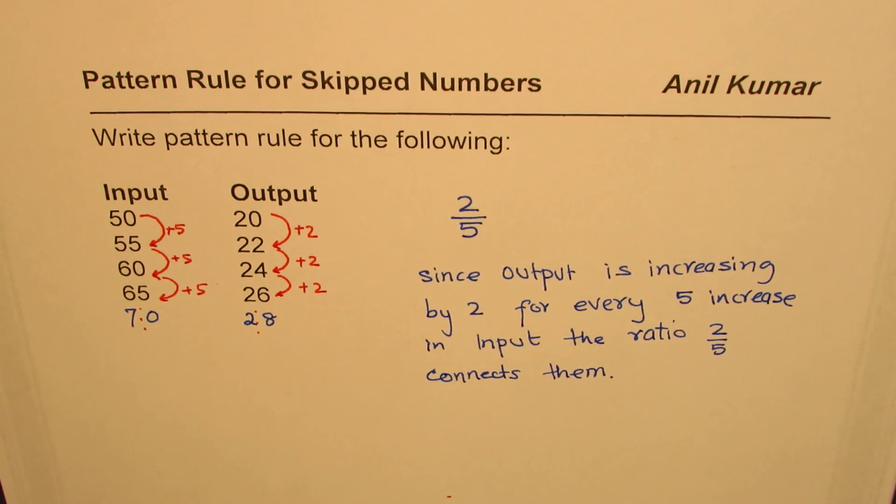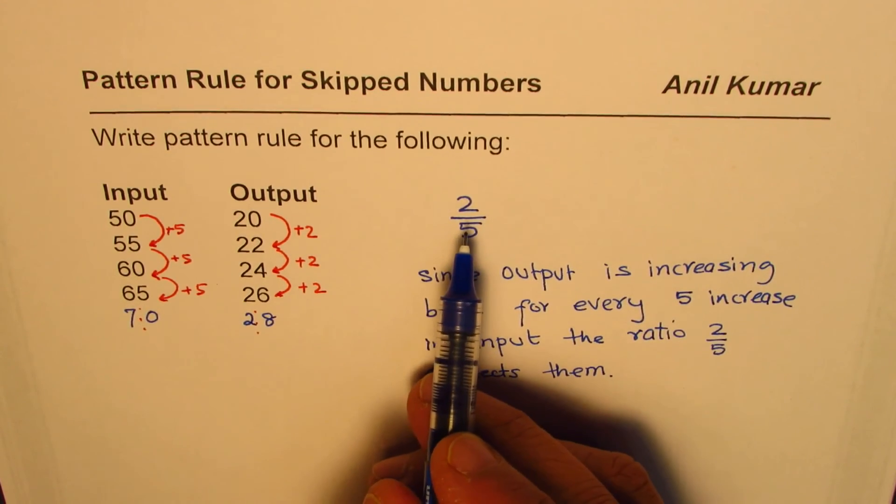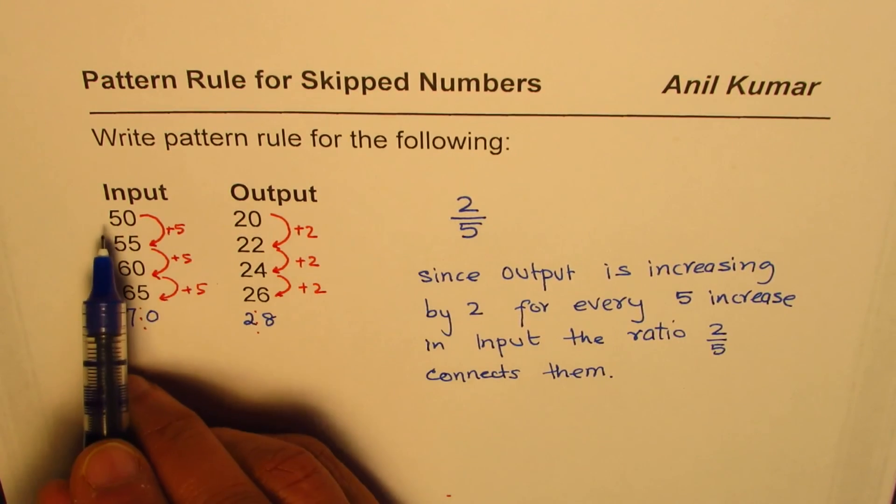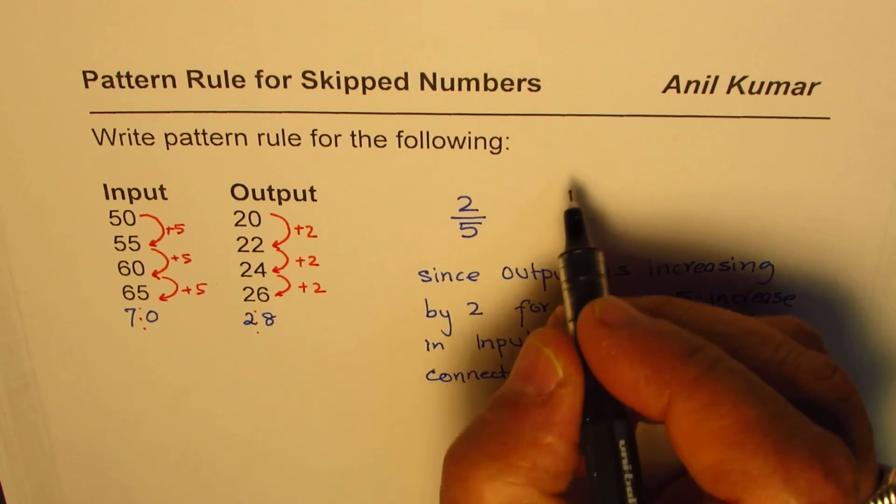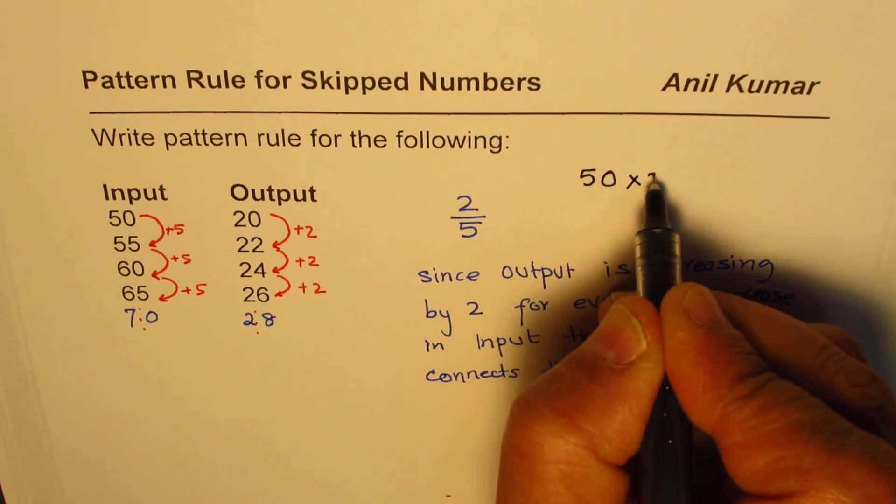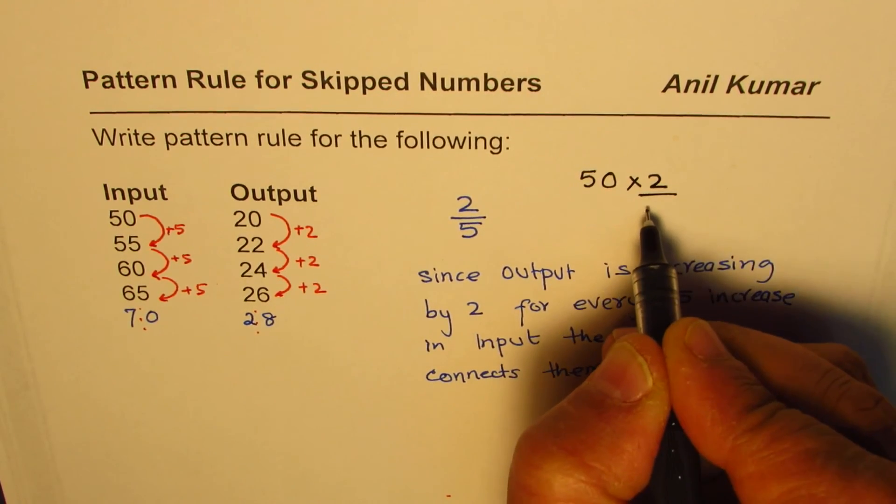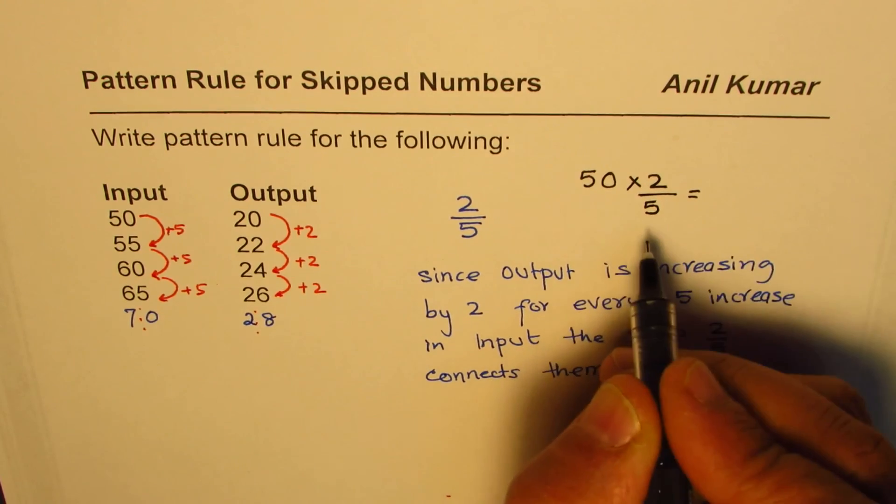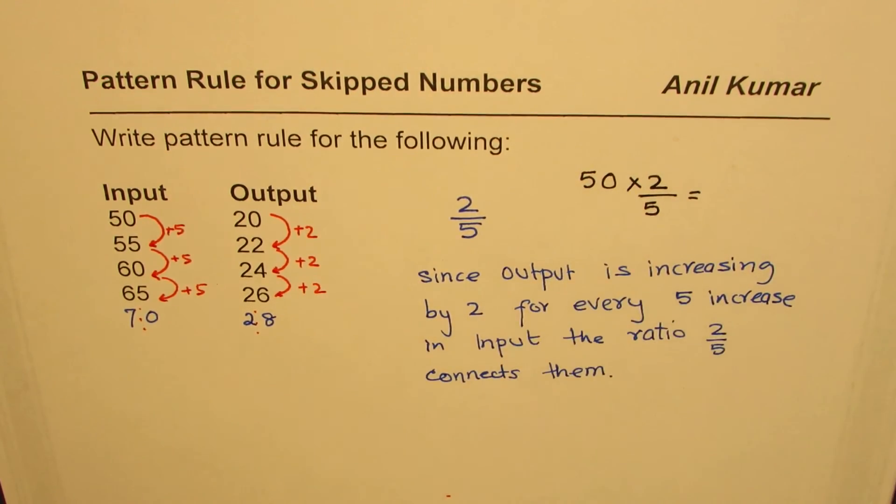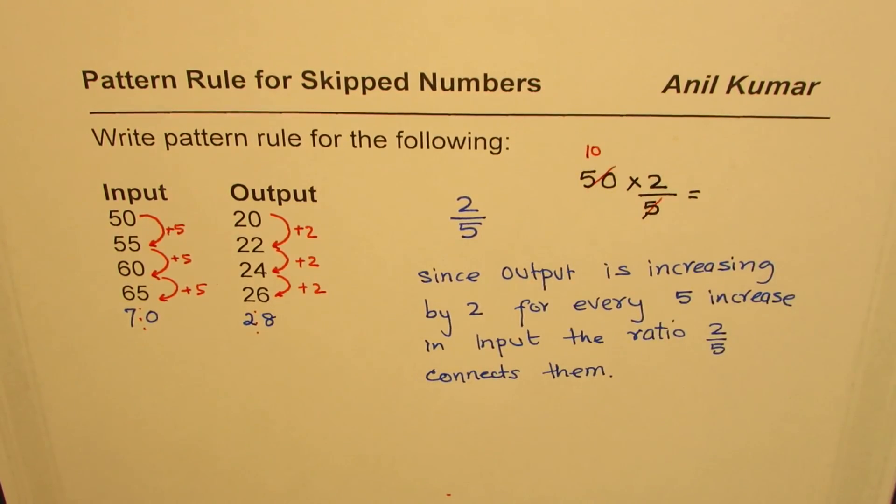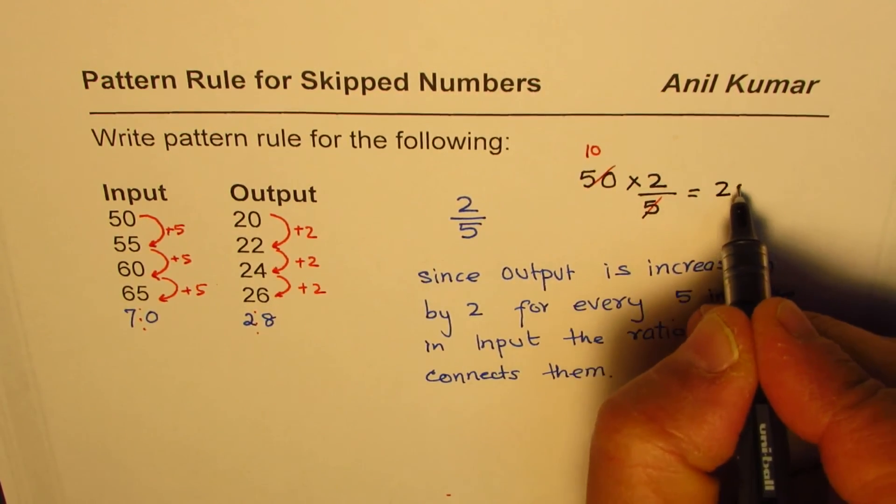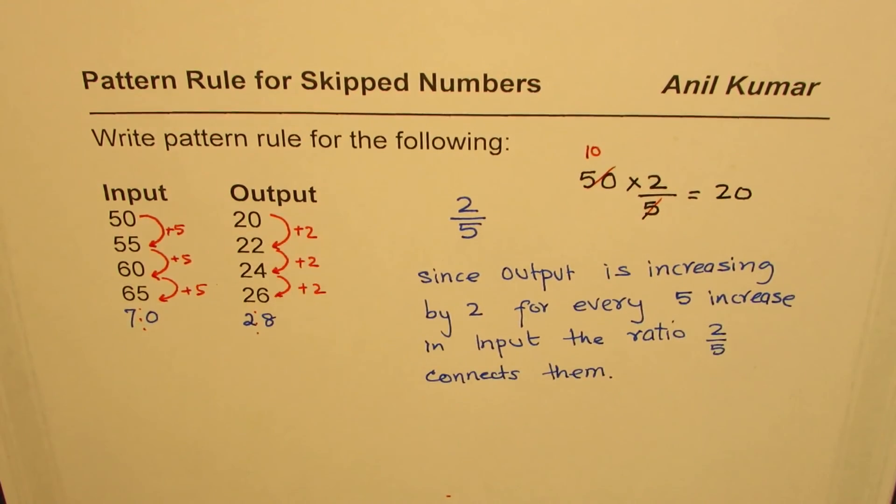So let's try to see what happens when we multiply 50 by 2 over 5. Let's test it out. If I do 50 times 2 divide by 5, then what do we get? We could divide 50 by 5 first. So if we do that, we get 10. 10 times 2 is 20. So we get 20. So it works!